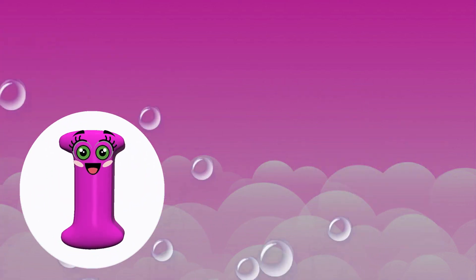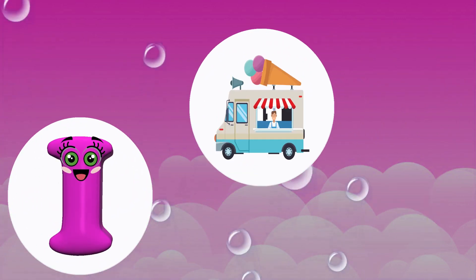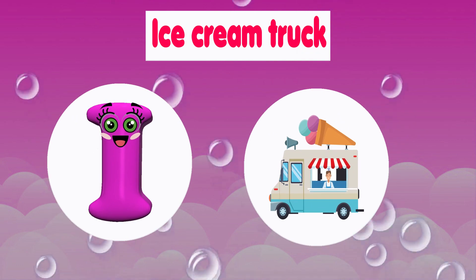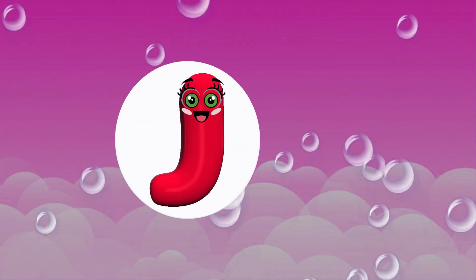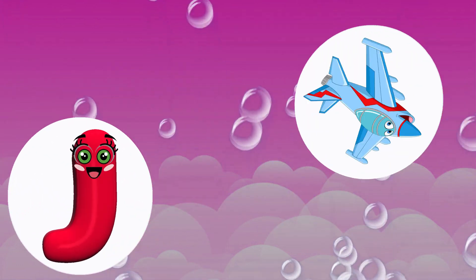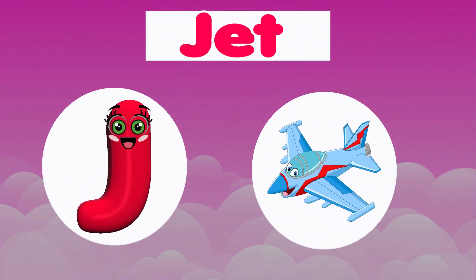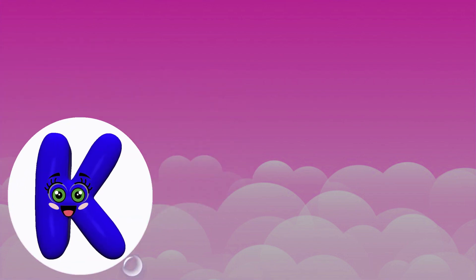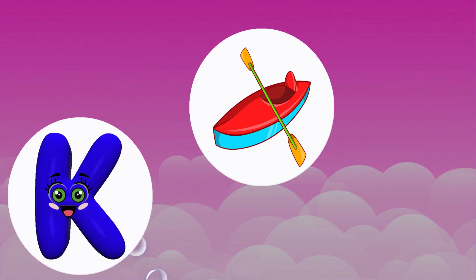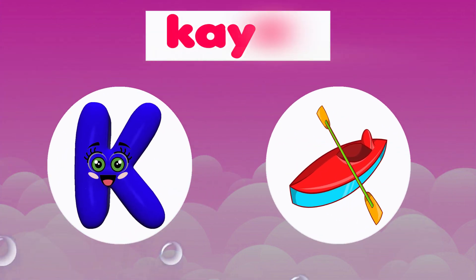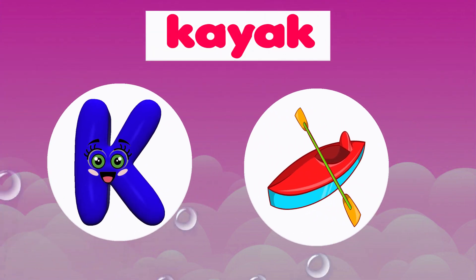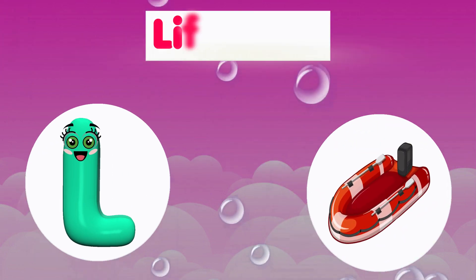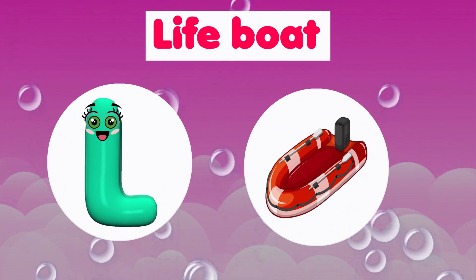I is for Ice Cream Truck. I, I. Ice Cream Truck. J is for Jet. J, J. Jet. K is for Kayak. K, K. Kayak. L is for Lifeboat. L, L. Lifeboat.